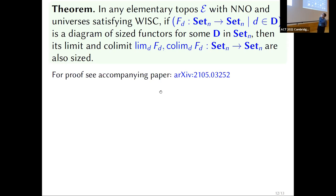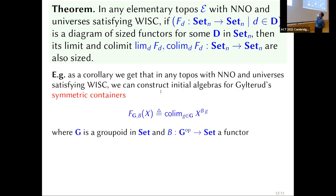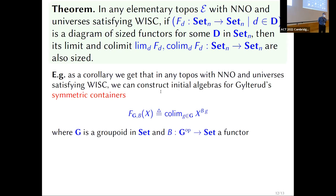Nevertheless we know it's true because we've proved it in Agda. The result is that sized functors in toposes satisfying WISC are quite a rich collection, and they all have initial algebras.